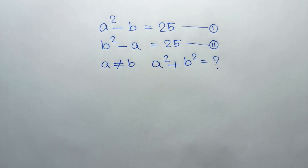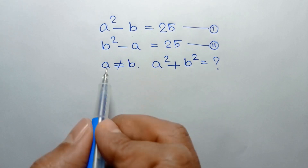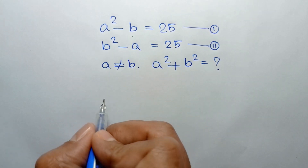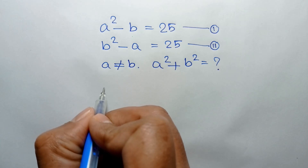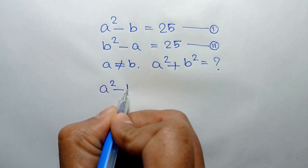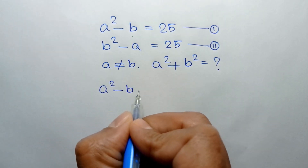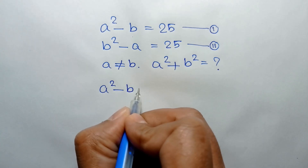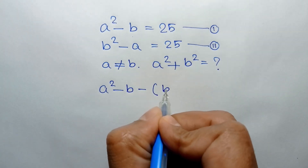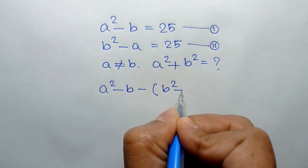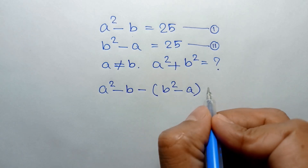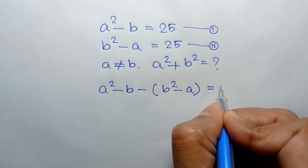If we subtract equation 2 from equation 1, we can write: A squared minus B, from equation 1, minus B squared minus A, from equation 2, is equal to 25 minus 25.